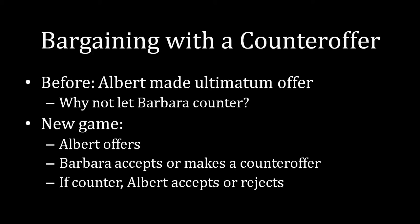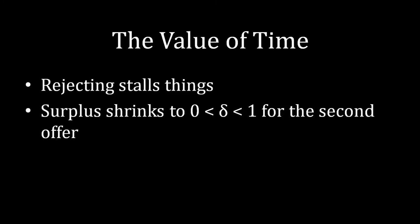Now, the one little wrinkle I have to add into this is the value of time. If we reject in this first stage, that's going to stall things. And the way we're going to model this stalling of the economic relationship is to use what's known as a discount factor. A discount factor is represented by a lowercase delta, commonly in economics and bargaining. That value between 0 and 1 is a lowercase delta. And what we're going to be doing with this lowercase delta is multiply it by the payoffs that you receive in the second stage if you have the offer being accepted.